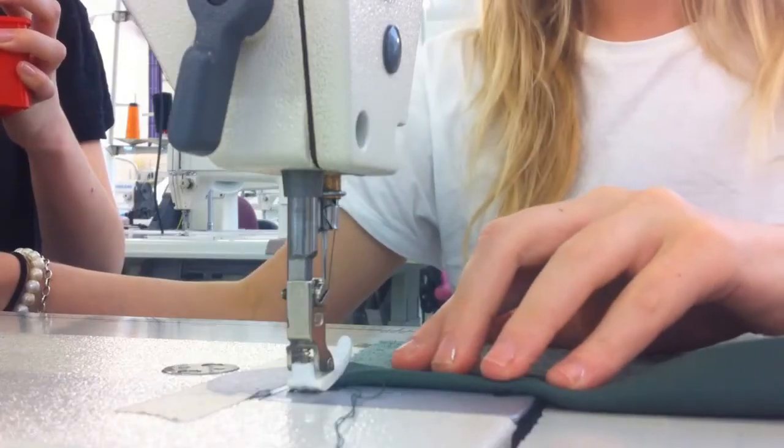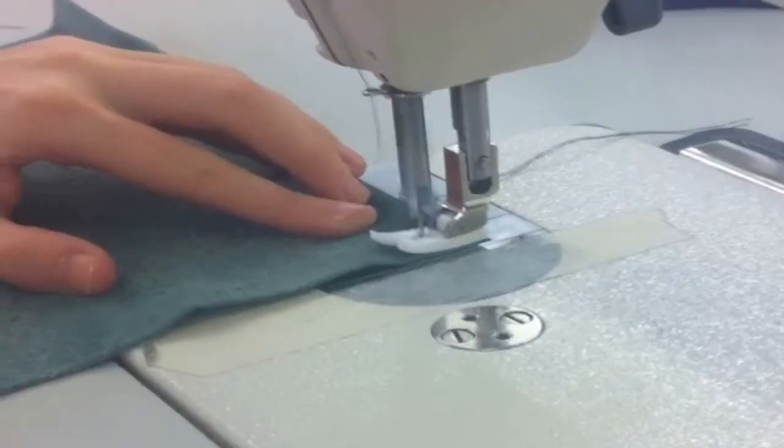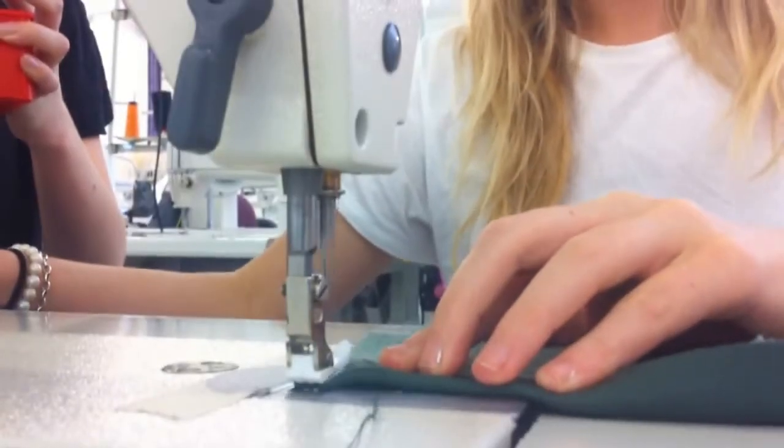Make a fold of about six centimeters on one side of the rectangle and sew on the top and bottom as shown in the video.